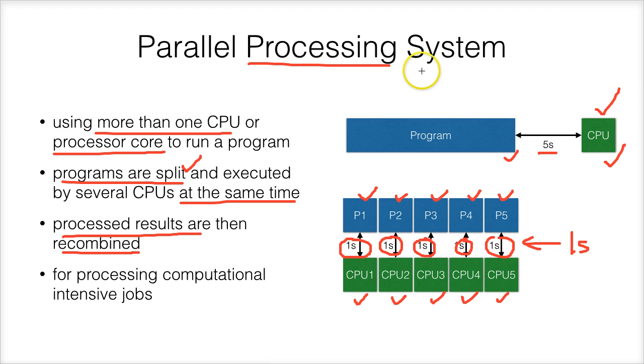Therefore, a parallel processing system will save the user a lot of time because the several CPUs are working together at the same time. So it is especially suitable for processing computationally intensive jobs, that is, very complex jobs.